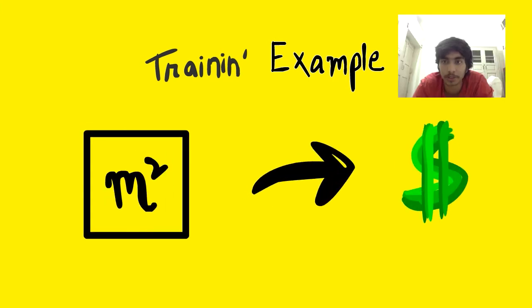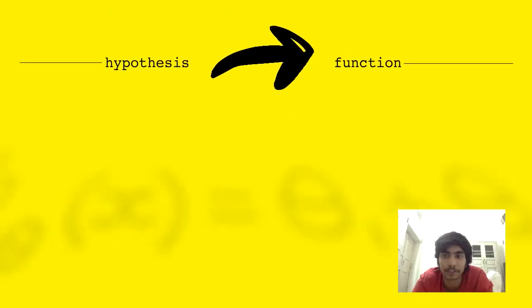So if we wish to predict the price of a living area, the price would be Y and the living area would be X and the way we calculate Y from X is called the hypothesis function.